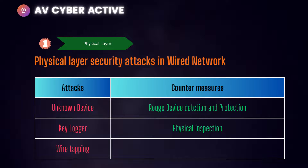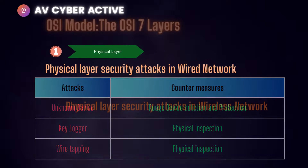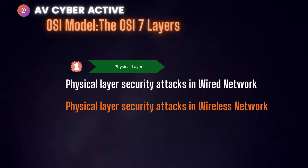Next is wiretapping. Although a very old or primitive method of attacking physical layer security, it's good information to have. The only way to recognize a wiretapping attack is to conduct a physical inspection. Moving on to preventative measures for physical layer security attacks in wireless networks — let's explain the attacks and their mitigating controls one by one.